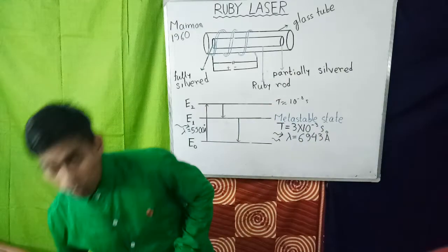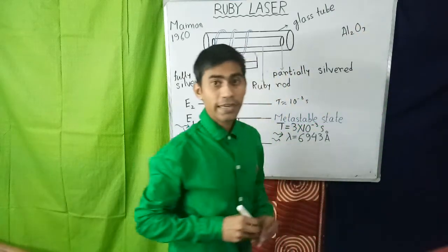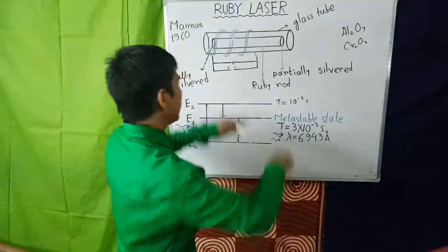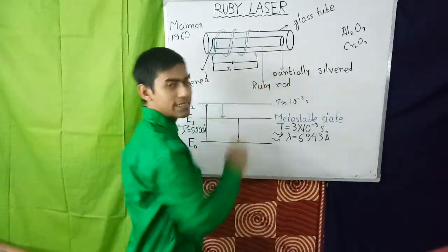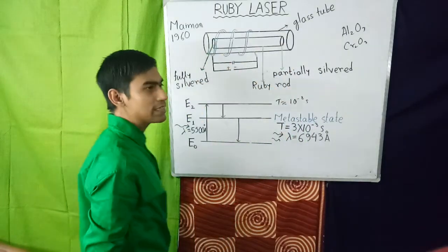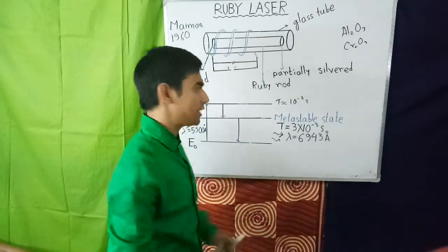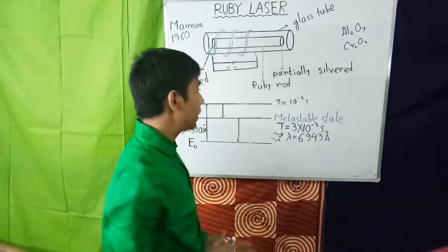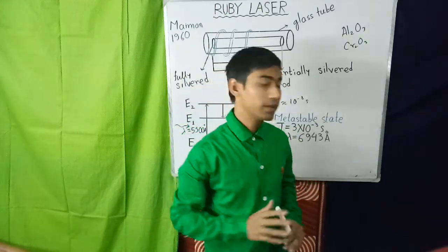Ruby consists of aluminium oxide doped with a small percentage of chromium oxide. The two faces of the cylindrical ruby rod are made optically flat and normal to the axis. One face is partially silvered and the other face is completely silvered. The fully silvered face completely reflects the light, whereas the partially silvered face reflects most of the light but allows a small part to produce the output laser light.